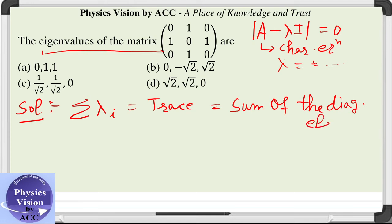We will use this property first to rule out the wrong options. What is the diagonal sum of diagonal elements in the given matrix? It is 0 plus 0 plus 0, that is sum should be 0 in the given question. It should be 0.